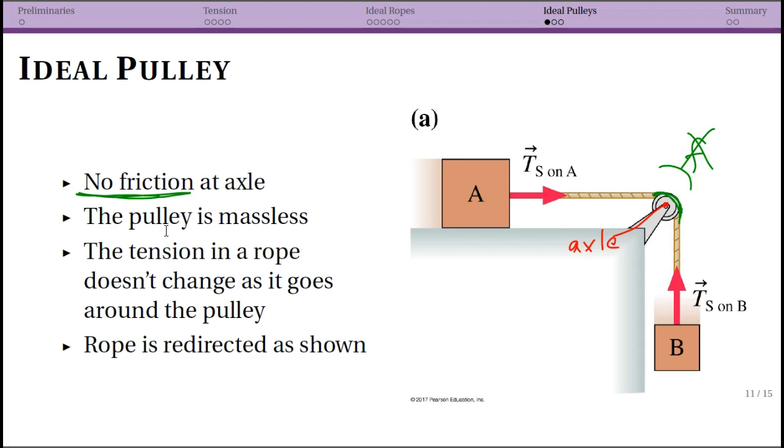The next thing is that the pulley is massless. This goes with the same arguments as before that what we really want to do is just have the pulley redirect the rope. We don't want the pulley to change the tension in the rope. If the pulley had mass it kind of would and you would have to think about friction then.